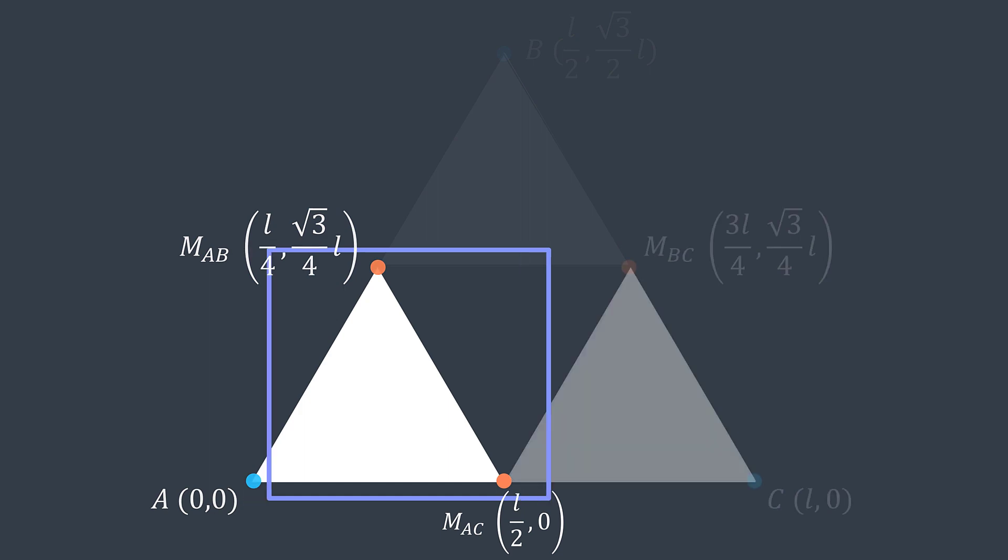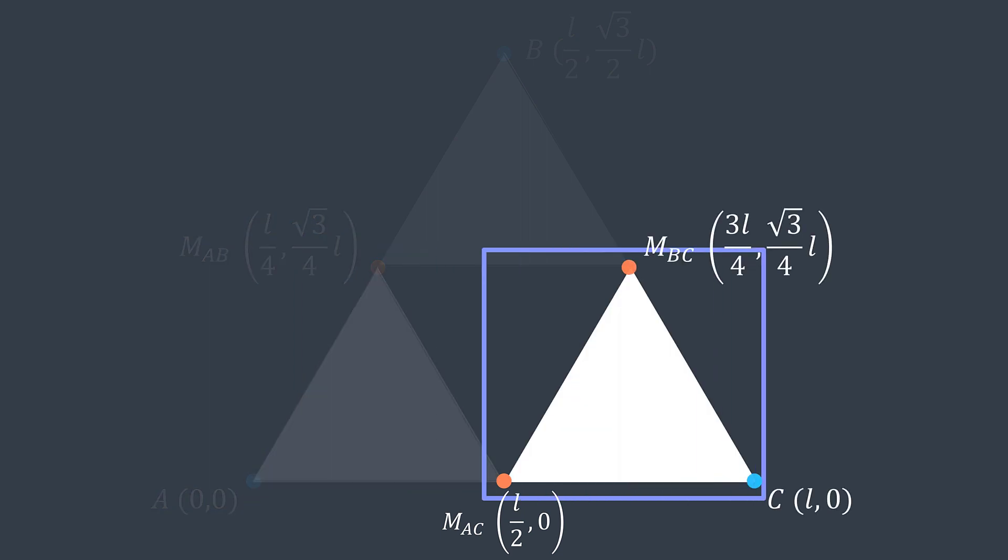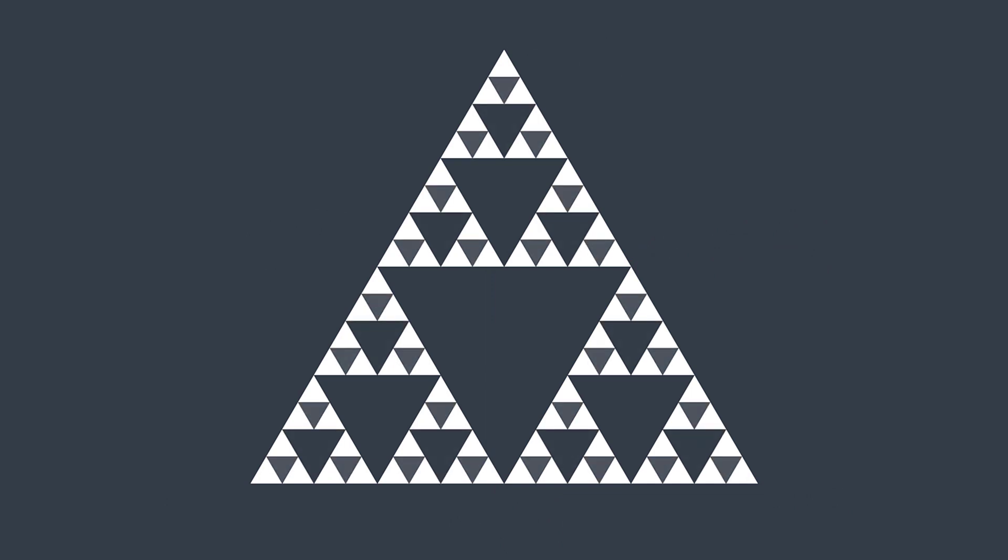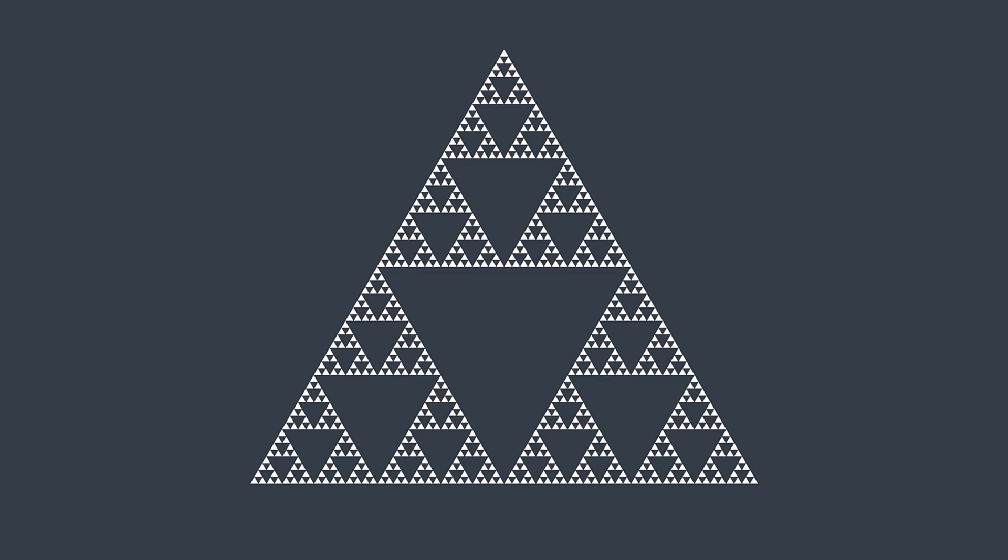By calling the recursive function on each sub triangle this way, their middle triangle will be removed. Then each one of them calls the recursive function on its sub triangles. And so on and so on infinitely, that's how we can create a Sierpinski triangle.